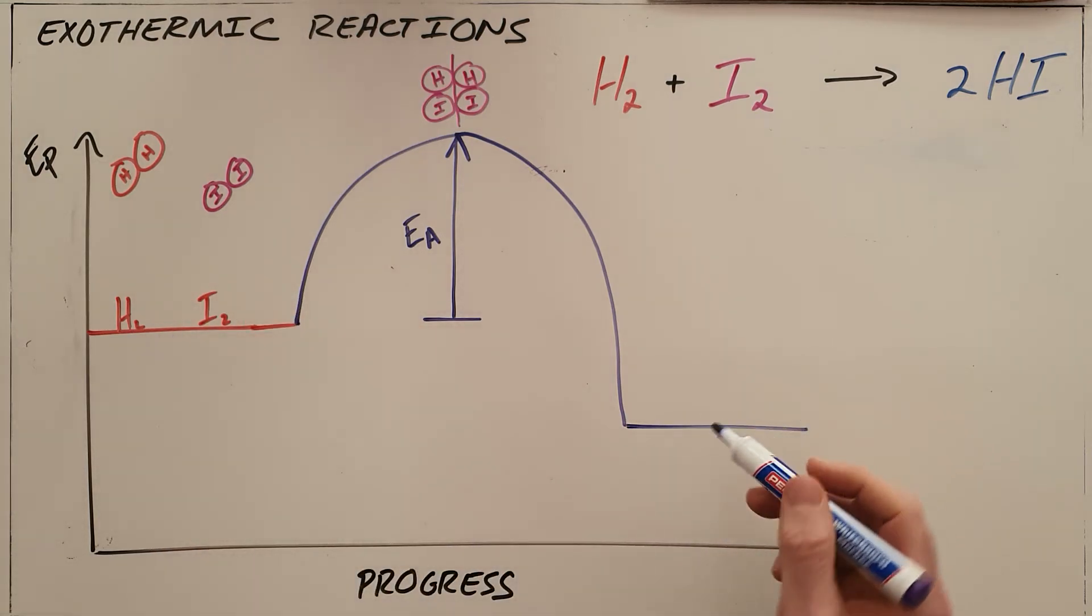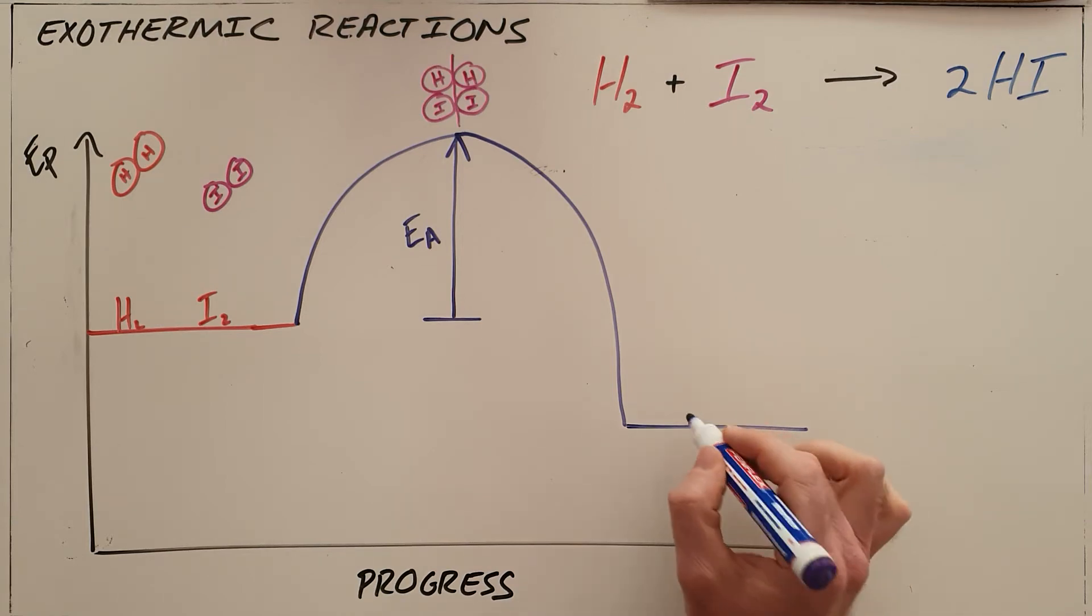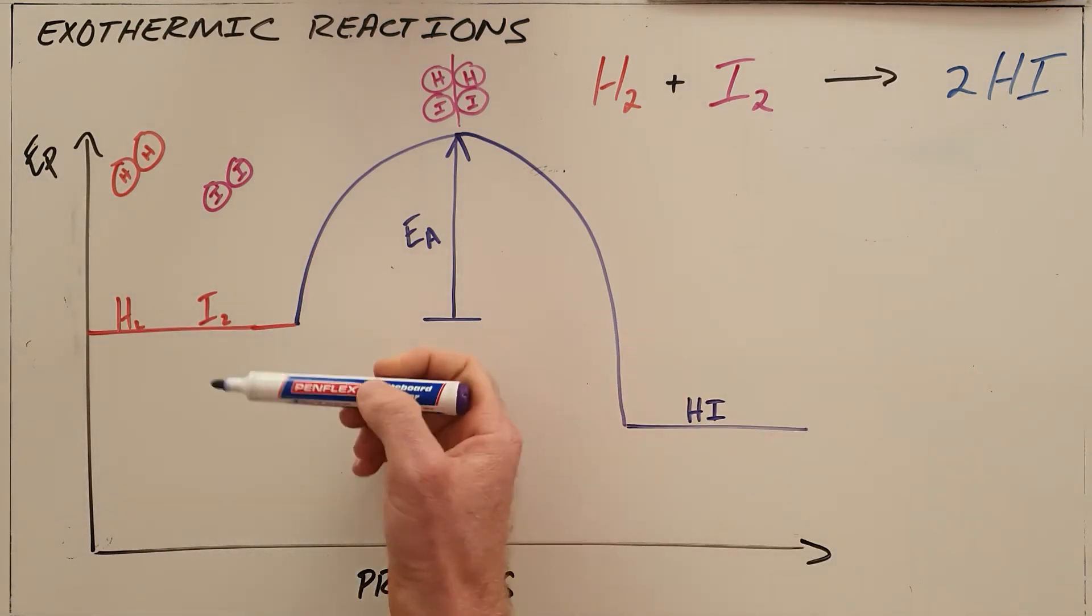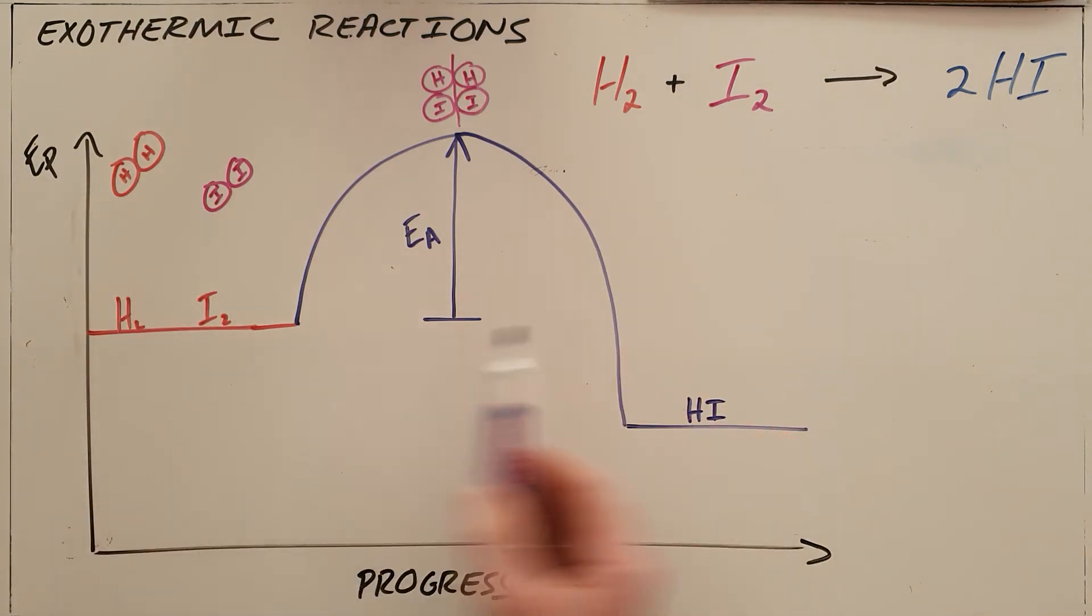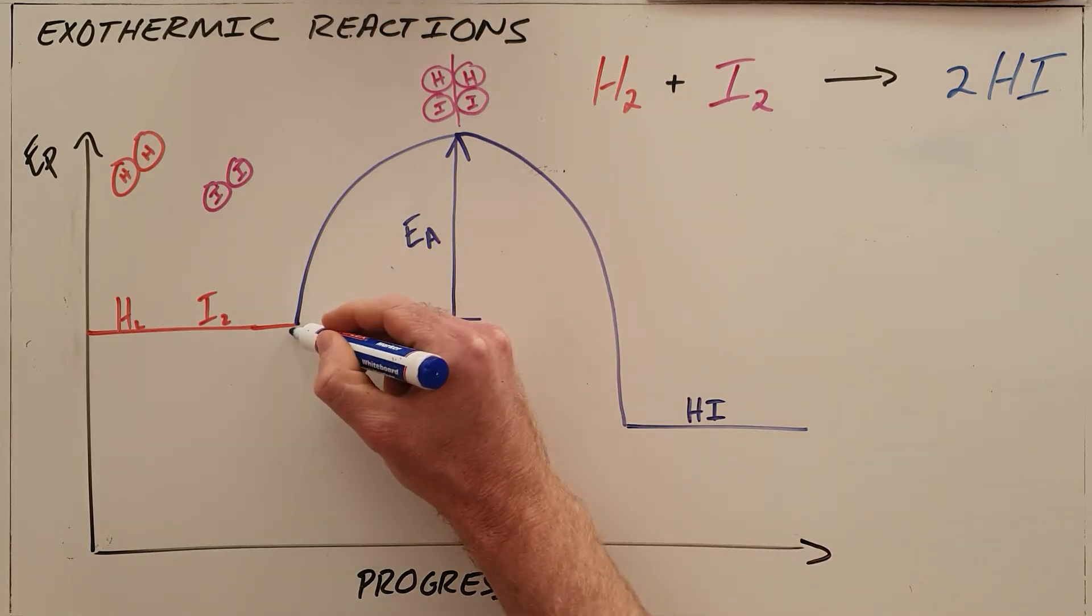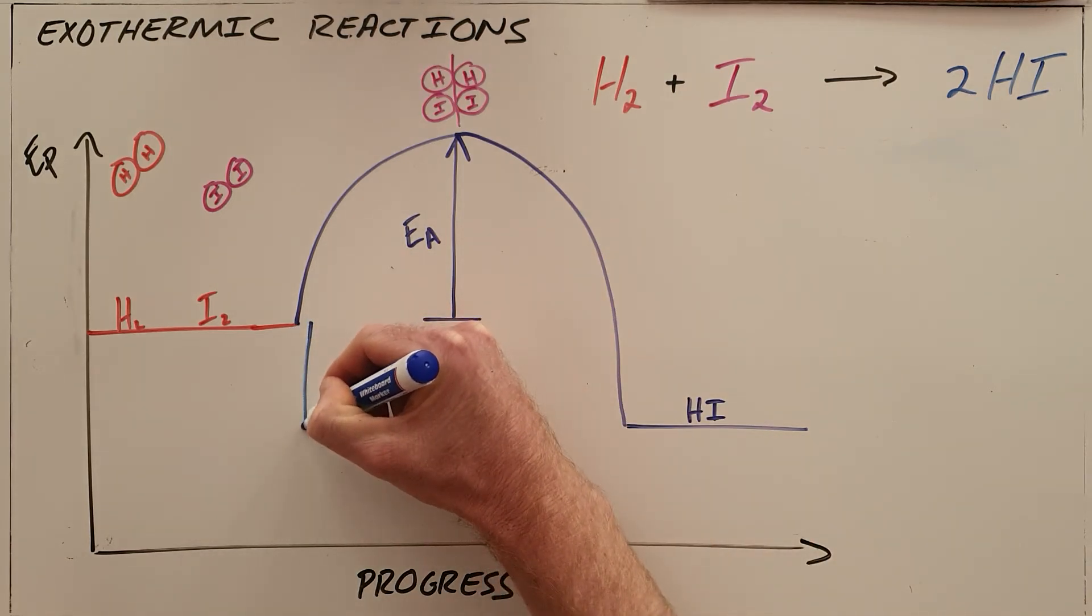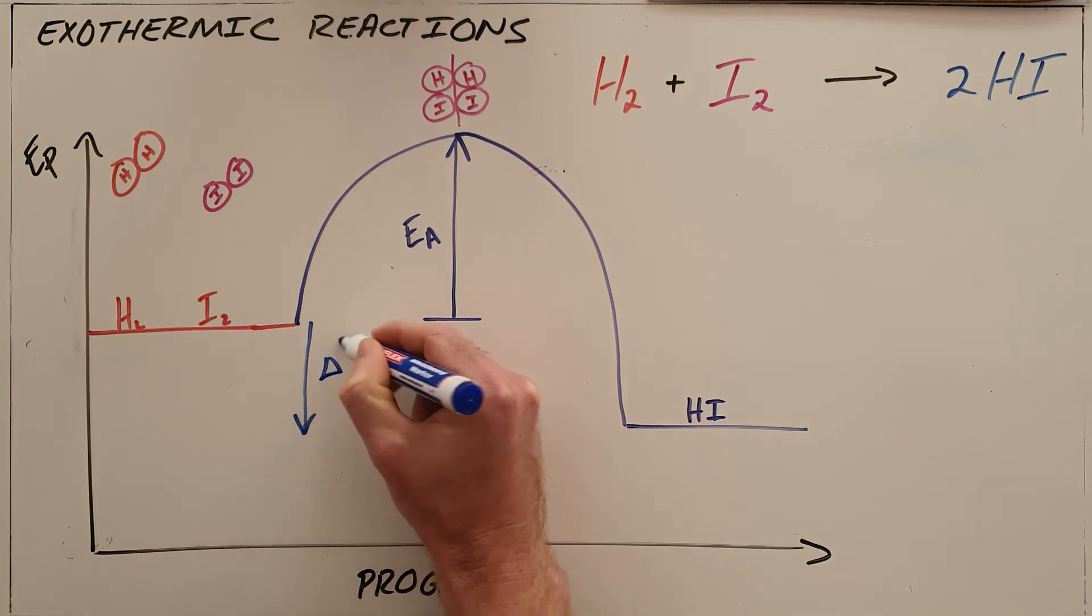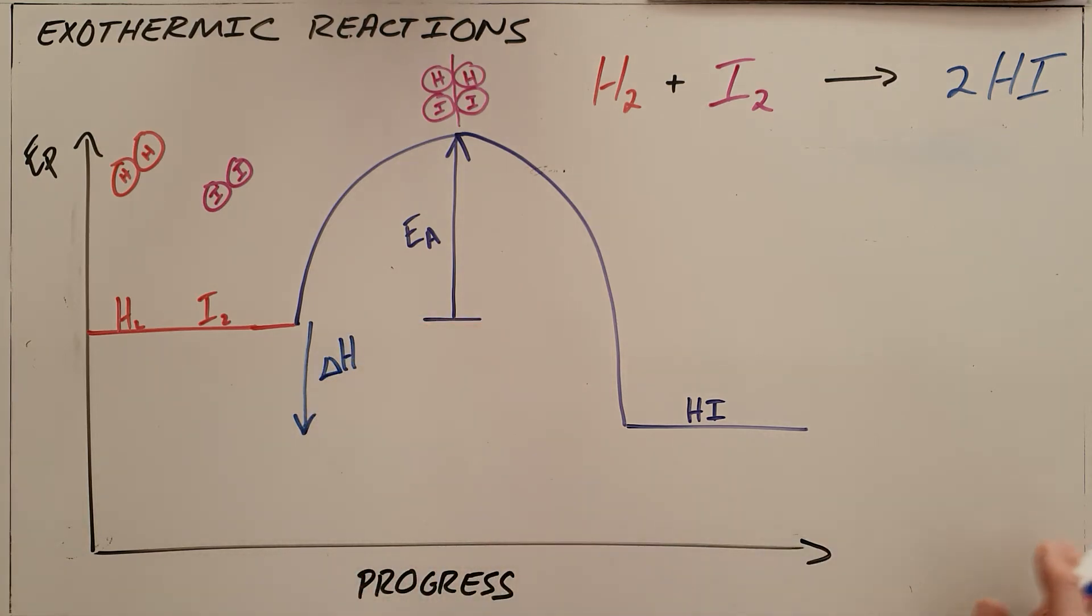So what we say is that the products in this reaction, the product being hydrogen iodide, has a lower potential energy than the reactants. And as we can see here there's a certain amount of energy that has been given off in this reaction because these compounds started with a certain potential energy and they ended with a lower potential energy, and we call that the enthalpy change. It is basically the amount of heat that is given off in a reaction.